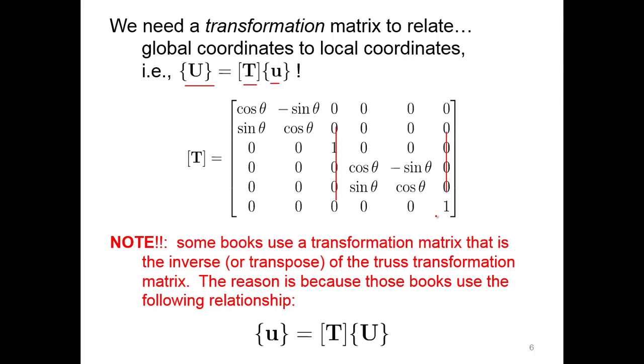I just wanna highlight, some books use a transformation matrix that is the inverse or the transpose of the truss transformation matrix. So instead of negative sine theta here, you'd have a negative sine theta over here. The reason they do this is because they look at the transfer matrix going from global to local, as opposed to local to global like we are. So just heads up with that, it's fine, it's just a little bit different.